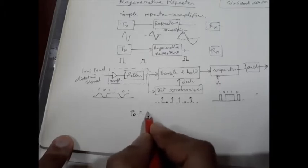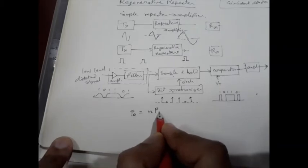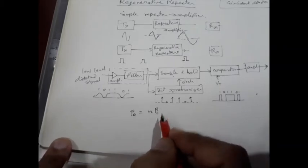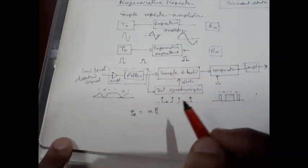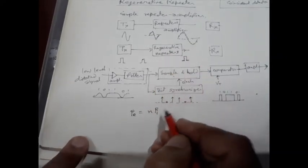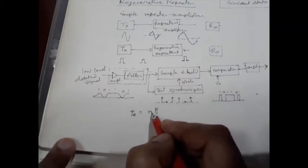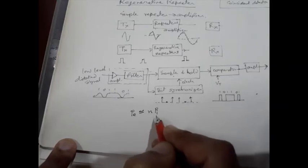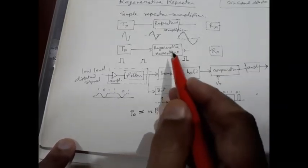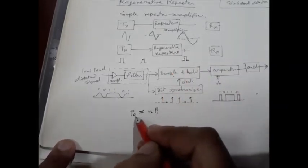The effective bit error probability will be n times the bit error probability of individual regenerative repeaters, assuming identical repeaters are used, where n is the number of repeaters. It is approximately, not exactly. That means more the number of repeaters, more will be the error rate.